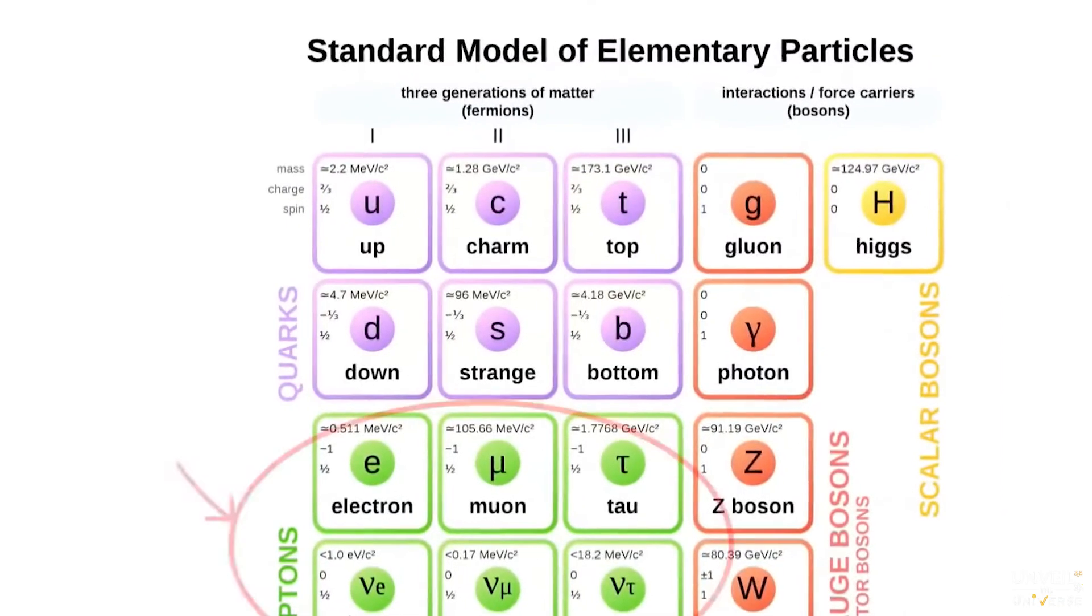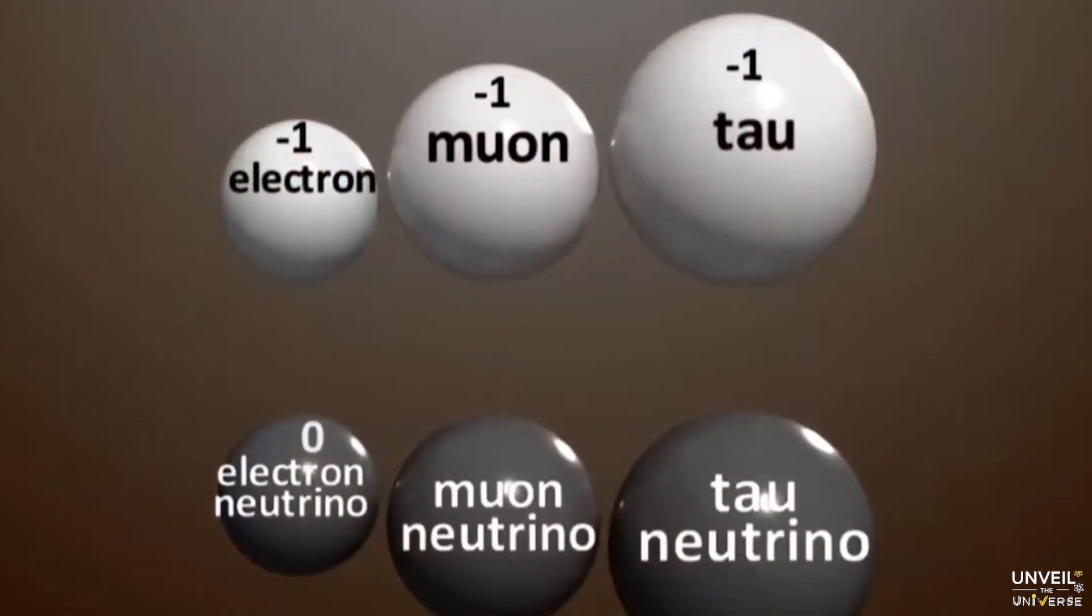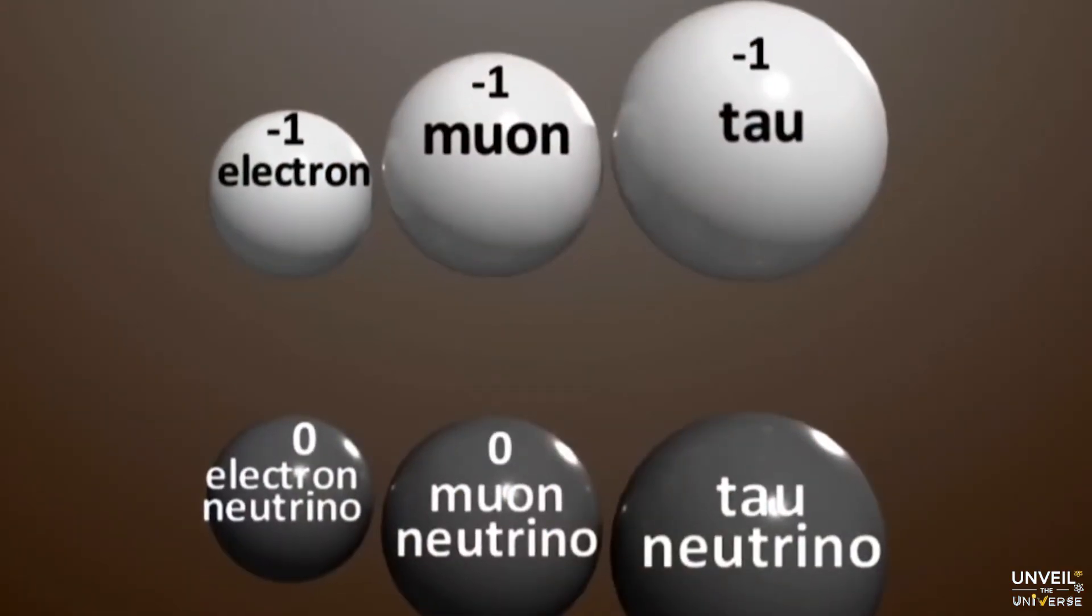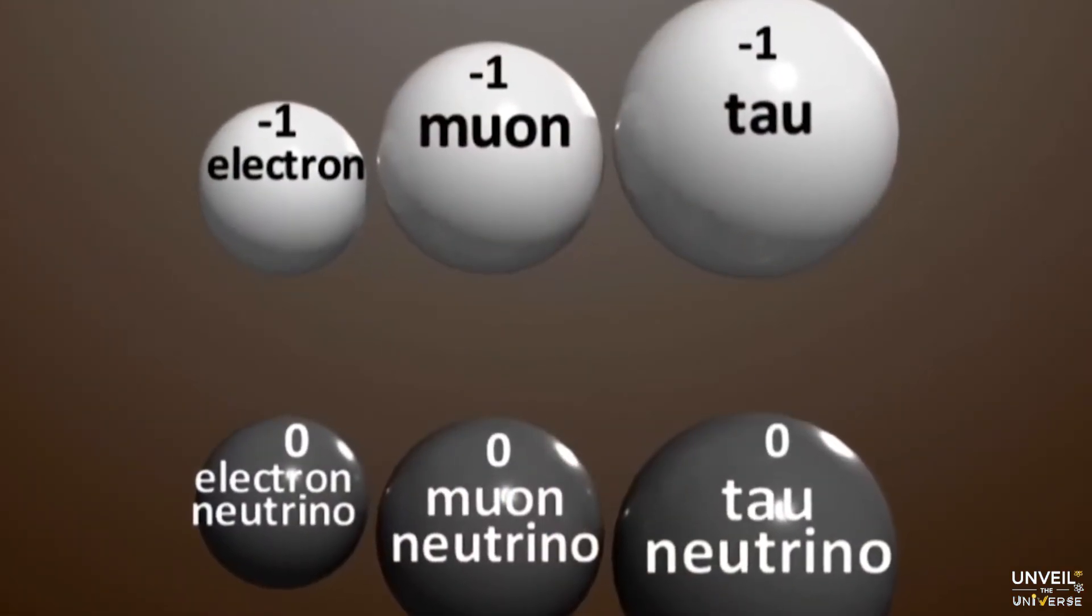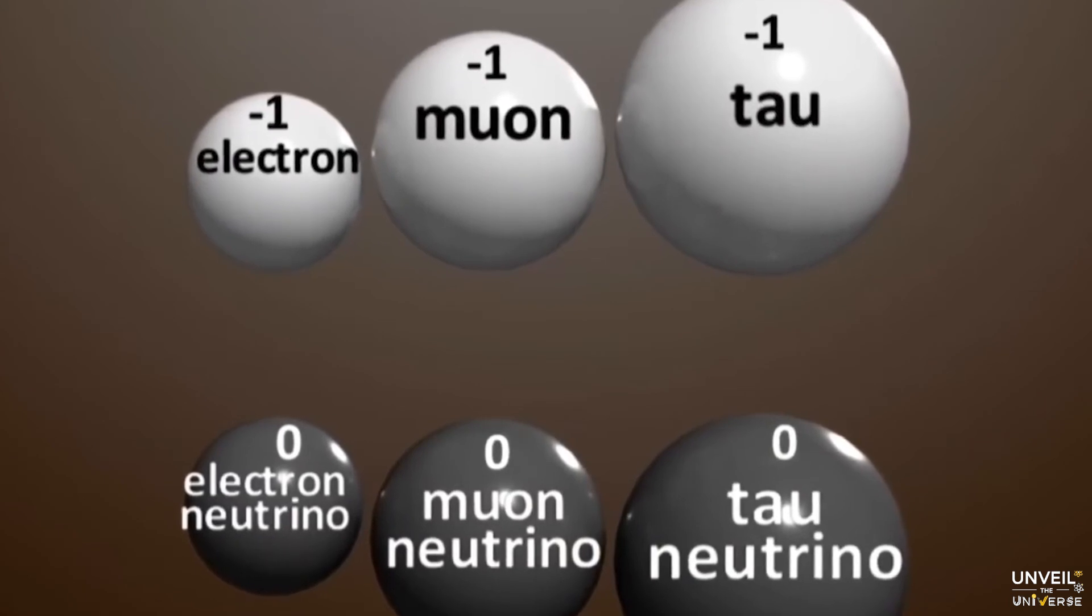Moving to the lepton category, we also have six particles: electron, electron neutrino, muon, muon neutrino, tau, and tau neutrino.